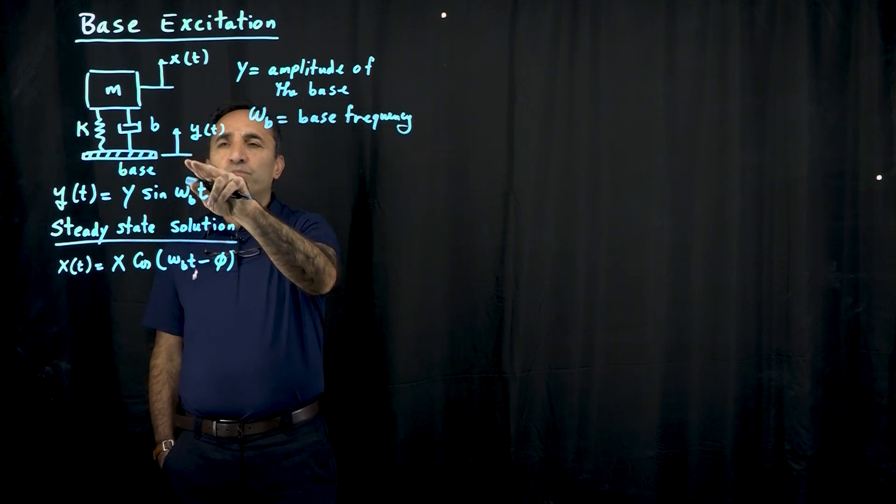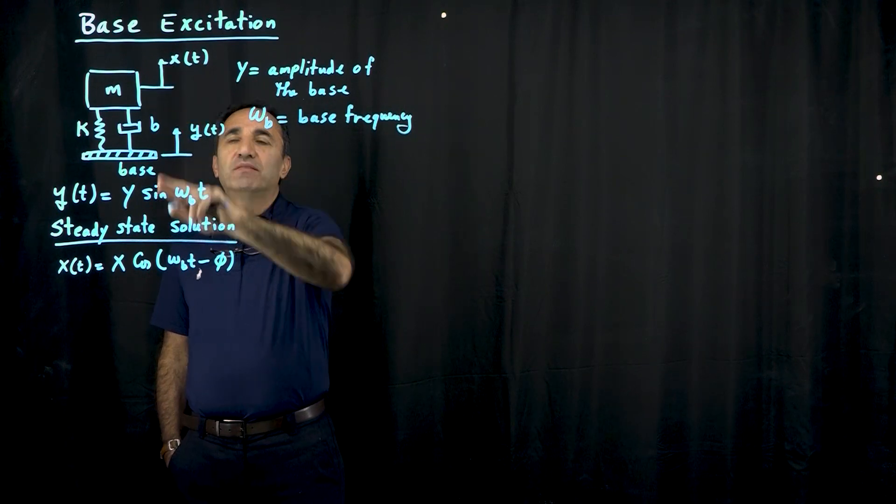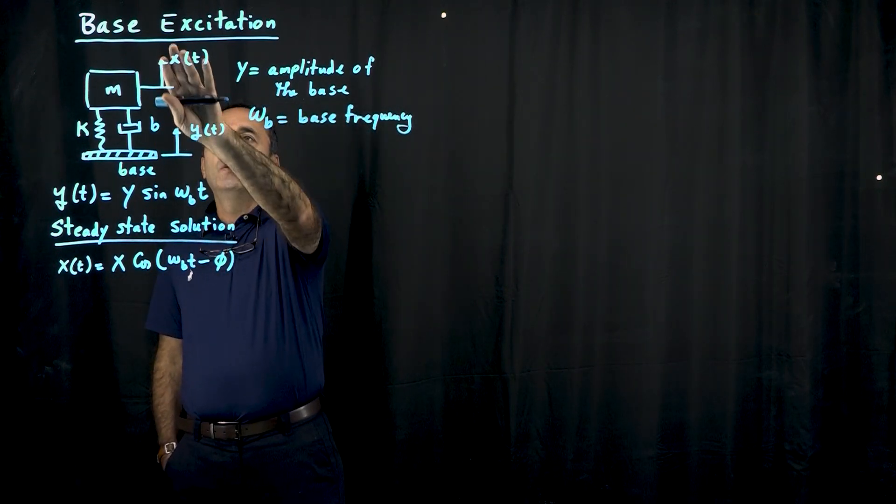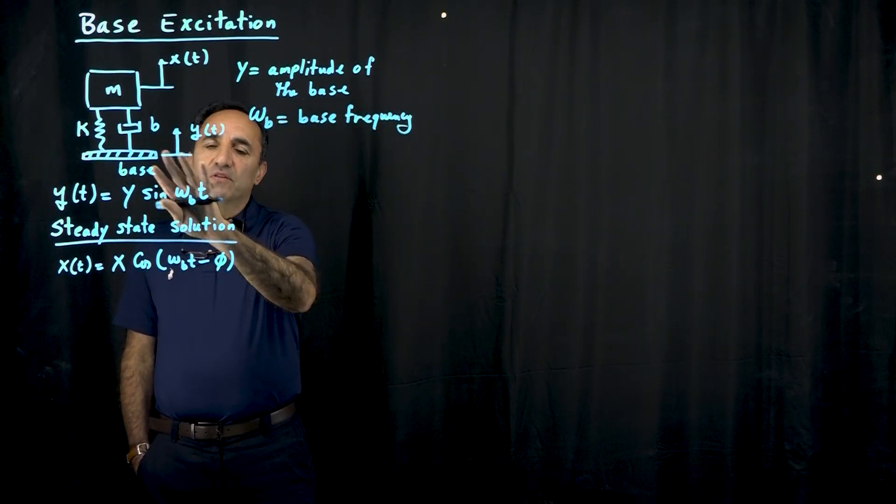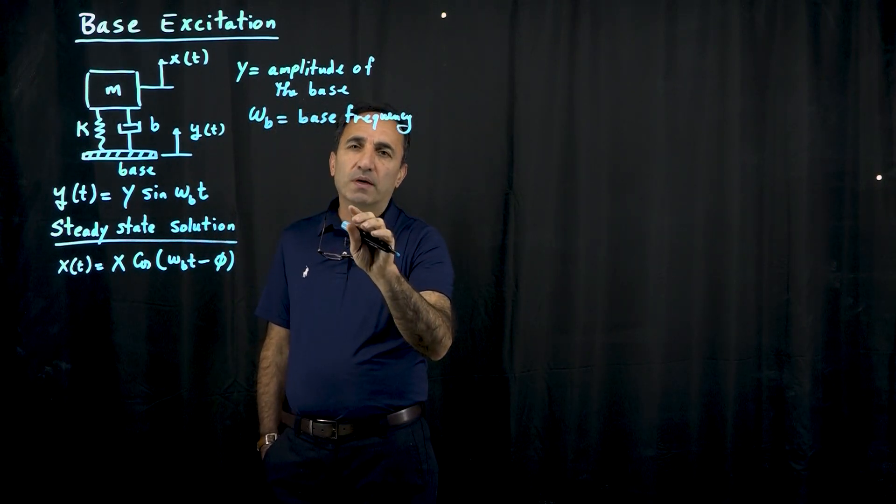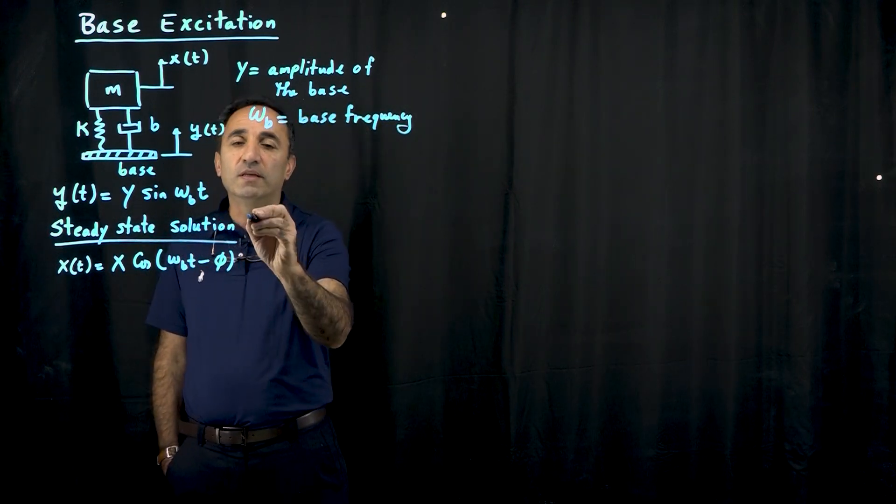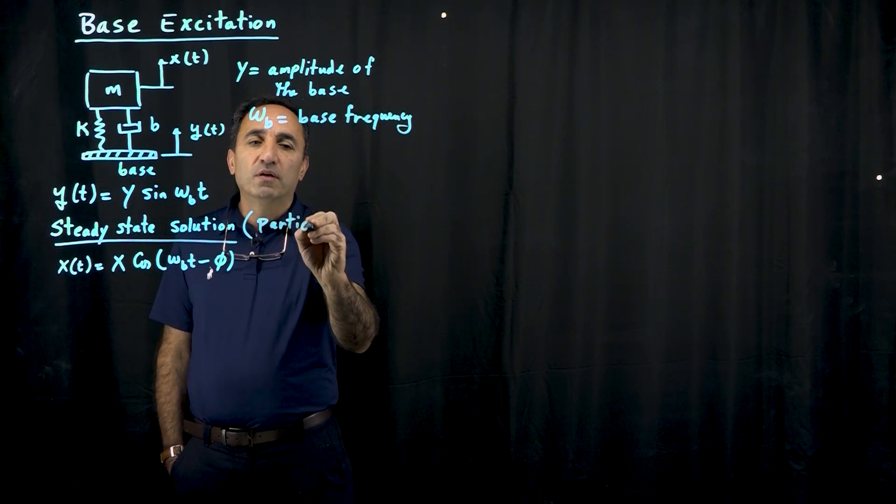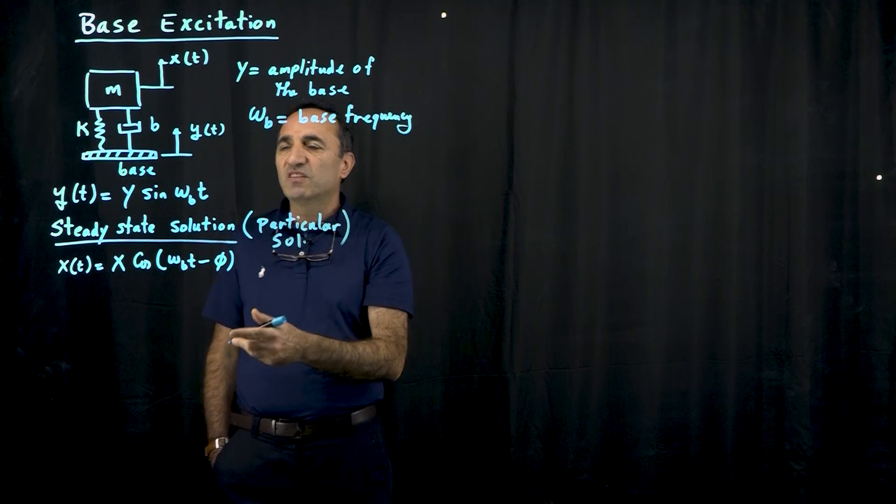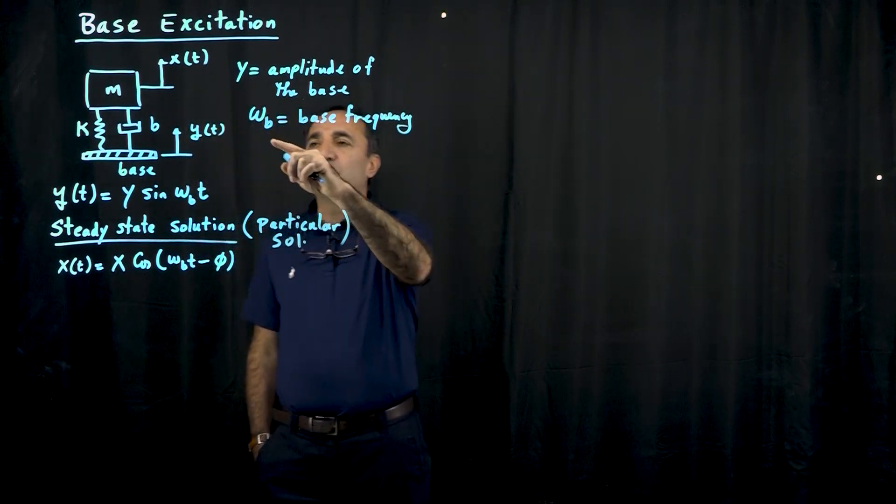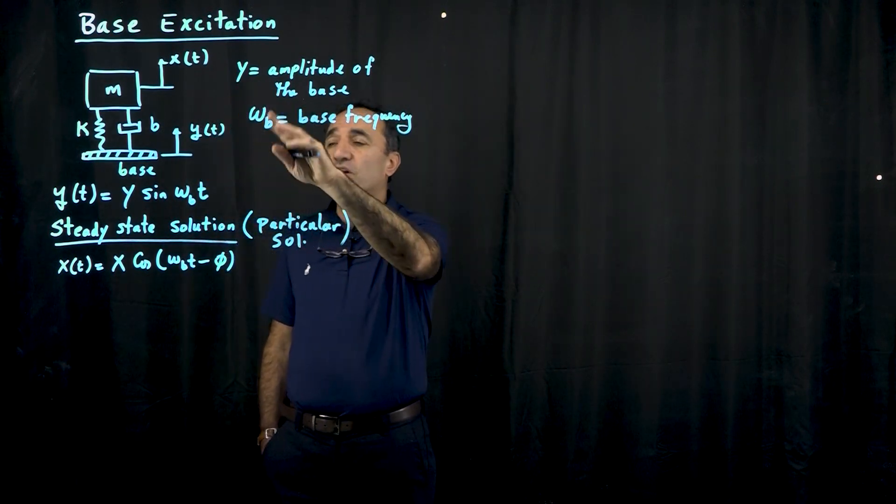So what's important in design is what would be the amplitude of the mass, the chassis of the car, for example. How much movement we have of the mass. And of course we can look at the total solution, but what is important really in design is what we call a steady state solution, which is also really the particular solution of the differential equation. I'm not going to bother with showing you the differential equation of this system. It's going to involve x double dot, the input y, x dot, and so on.